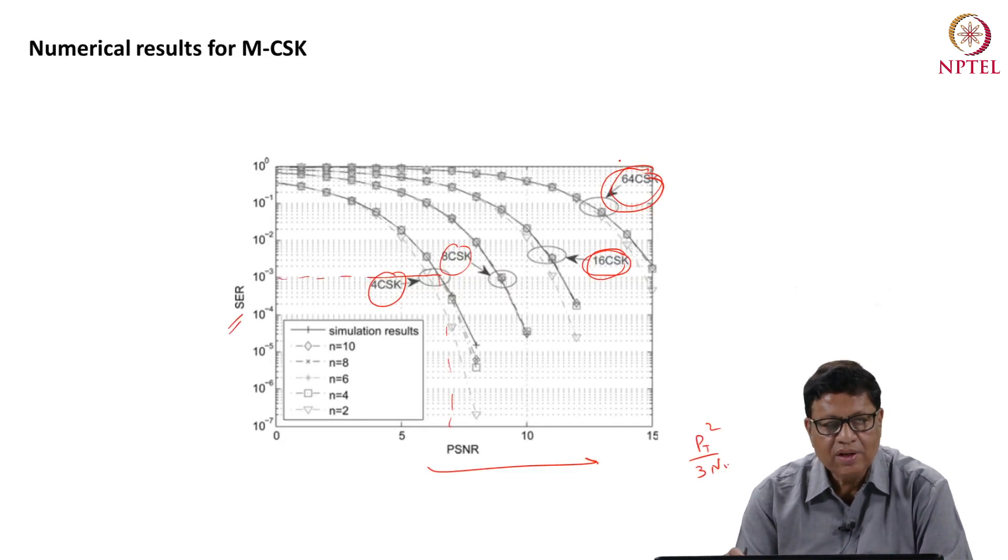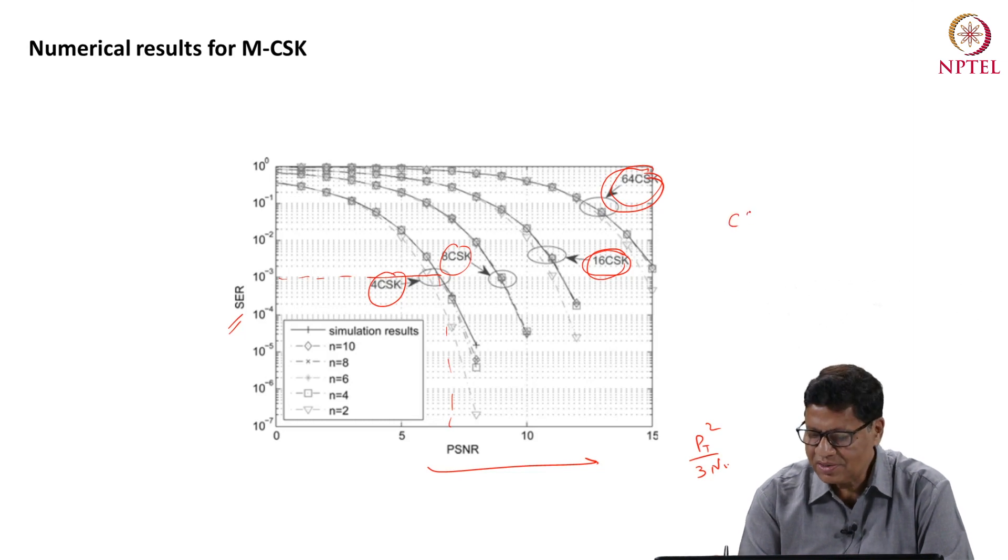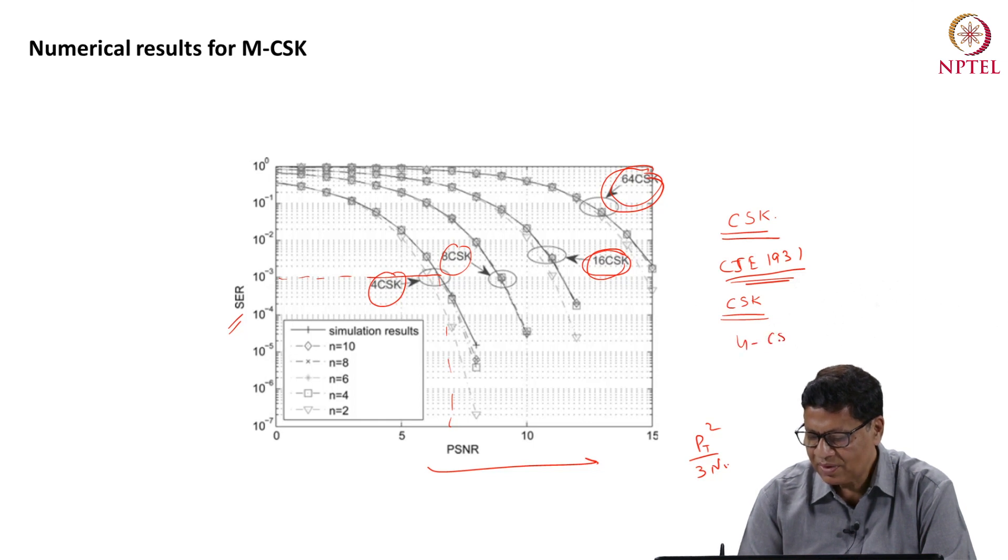With this we complete the discussion of CSK modulation. In this lecture we understood about the CIE diagram which is the chromaticity diagram where you can map any color to x, y coordinates and then we discussed the advantage of CSK, the block diagram of a CSK system and we also calculated the symbol error probability for a 4 CSK system and also discussed how to calculate or how to find out the decision regions for 8 CSK or 16 CSK and then we have seen a comparative study of different M-CSK in this particular diagram.